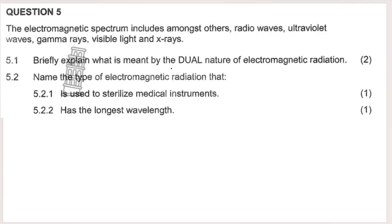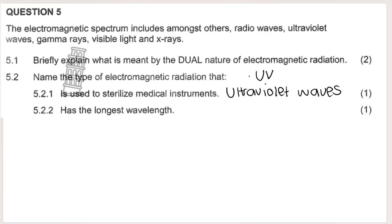Question 5.2: name the type of electromagnetic radiation used to sterilize medical instruments. This is theory work — the answer is ultraviolet waves. Ultraviolet waves have a relatively high frequency and therefore high energy (E = h × f). High energy allows us to kill bacteria and sterilize medical instruments.